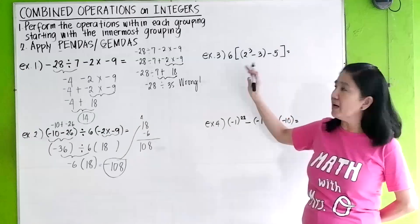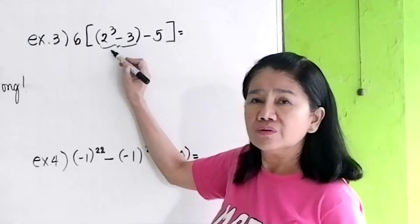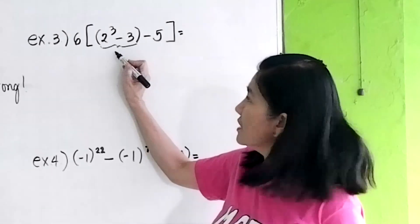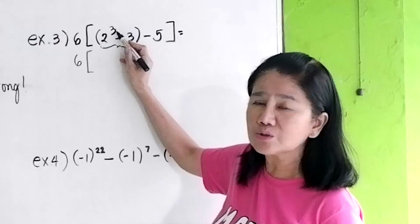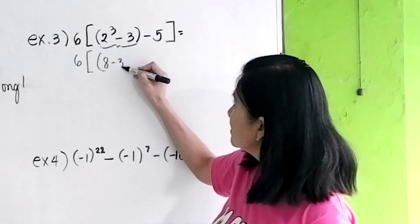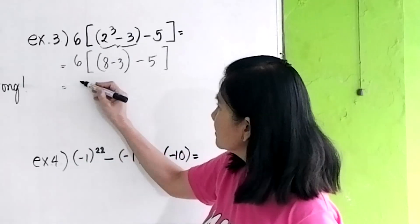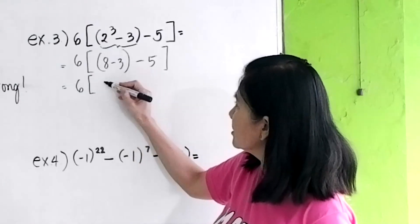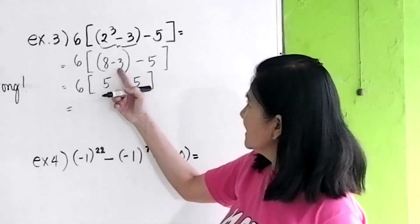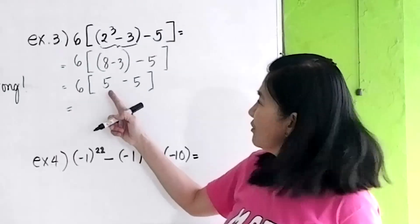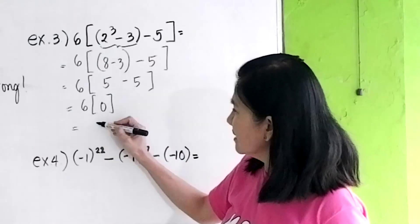In example number 3, there is a grouping within a grouping — that is what I mean by innermost grouping. So you do the operation inside the innermost grouping first. Copy 6. We have 2 cubed: 2 times 2 is 4, times 2 is 8. So that will be 8 minus 3, copy minus 5. Then 6 times 8 minus 3 is 5, minus 5. So 5 minus 5 equals 0, and 6 times 0 equals 0.